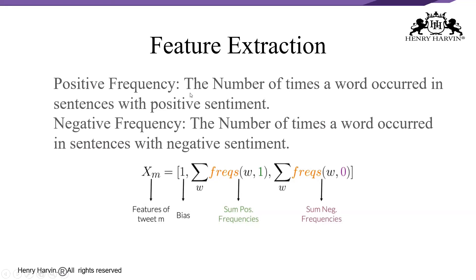In feature extraction, positive frequency means the number of times a word occurred in sentences with a positive sentiment, and negative frequency means the number of times a word occurred in sentences with a negative sentiment. A frequency dictionary keeps track of positive and negative frequencies of each word. For example, for the sentence 'I'm happy', we identify how many times it appears in positive contexts versus negative. Using a frequency dictionary reduces the dimensions of each row by representing each sentence as a feature matrix.